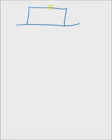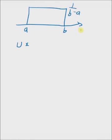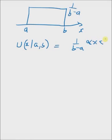Consider a uniform distribution that has a value 1 by b minus a, where b and a are the limits of the distribution. Mathematically, this is defined as u of x given parameters a comma b, equal to 1 by b minus a, when x is between a and b, and 0 elsewhere.